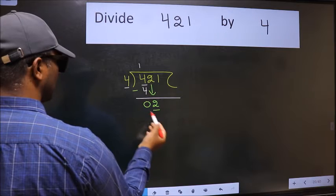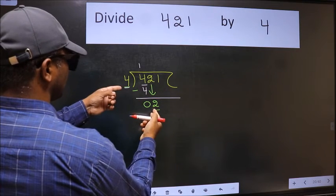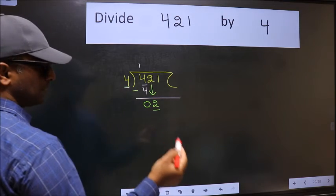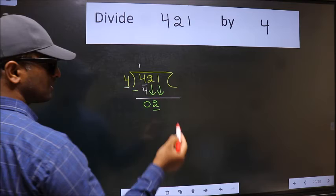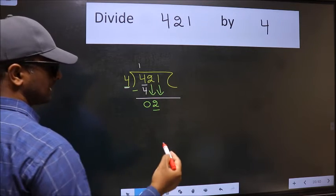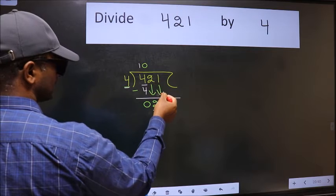Now here we have 2 and here 4. 2 is smaller than 4. So we should bring down the second number. And the rule to bring down second number is we should put 0 here. Then only we can bring this number down.